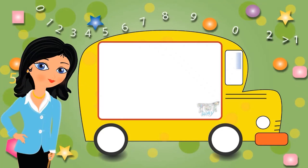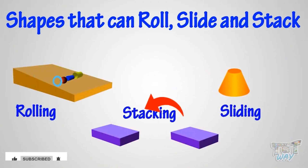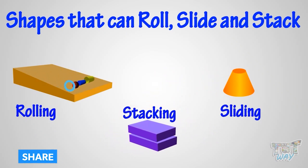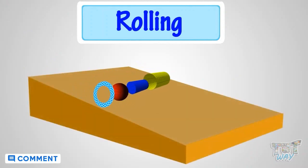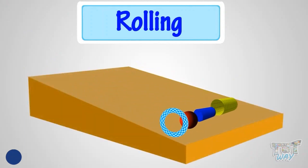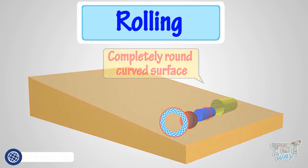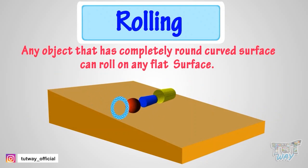Hi kids! Today we will learn which types of shapes can roll, slide, or be stacked upon each other. Let's get started. This is rolling. Any object that has a completely round curved surface can roll on any flat surface.